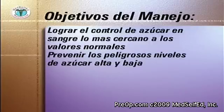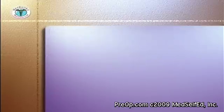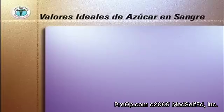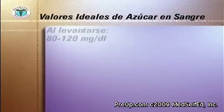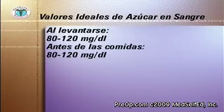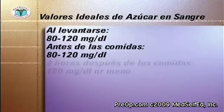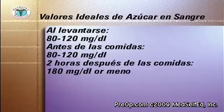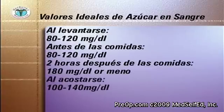De acuerdo con el Instituto Nacional de Salud, los valores ideales de azúcar en sangre para la mayoría de la gente son: al levantarse, 80 a 120 mg por decilitro; antes de las comidas, 80 a 120 mg por decilitro; dos horas después de las comidas, 180 mg por decilitro o menos; al acostarse, 100 a 140 mg por decilitro.